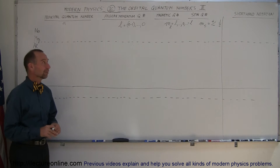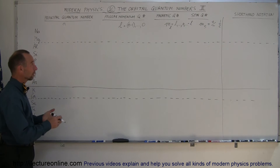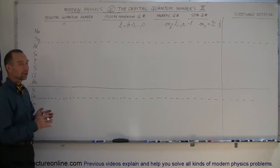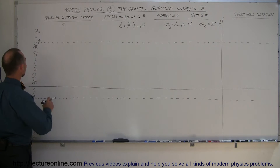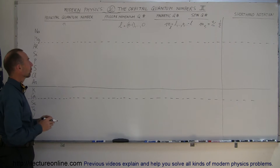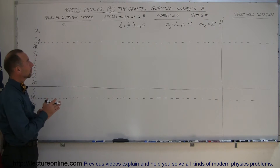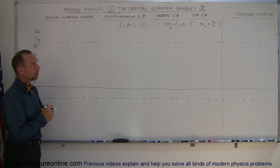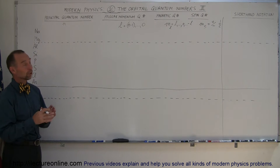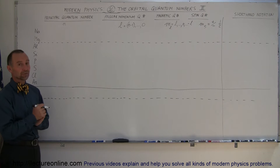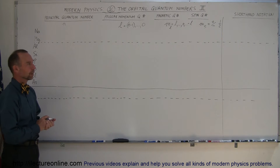To gain additional understanding of how we deal with quantum numbers and orbital quantum numbers, let's now look at the next elements on the periodic table, starting with sodium. We want to find the principal quantum number, the angular momentum quantum number, the magnetic quantum number, and the spin quantum number, and also indicate the electron configuration in shorthand notation.